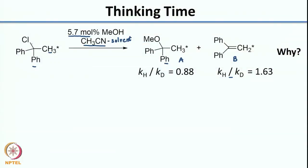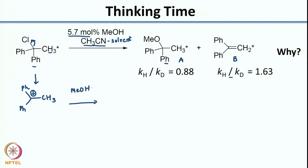Let us first start with the mechanism. The first step in the mechanism would be formation of the carbocation. Once you form the carbocation, you can have methanol add in. If methanol adds in, you will get product A.